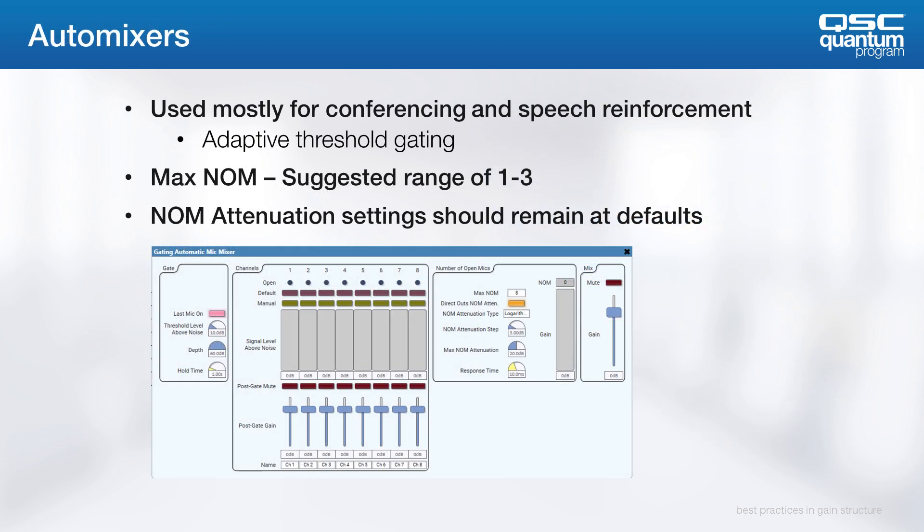Auto mixers are used mostly for conferencing and speech reinforcement, and use an adaptive threshold for gating. The most important feature of the auto mixer is that it keeps the overall output level constant regardless of the number of mics open.